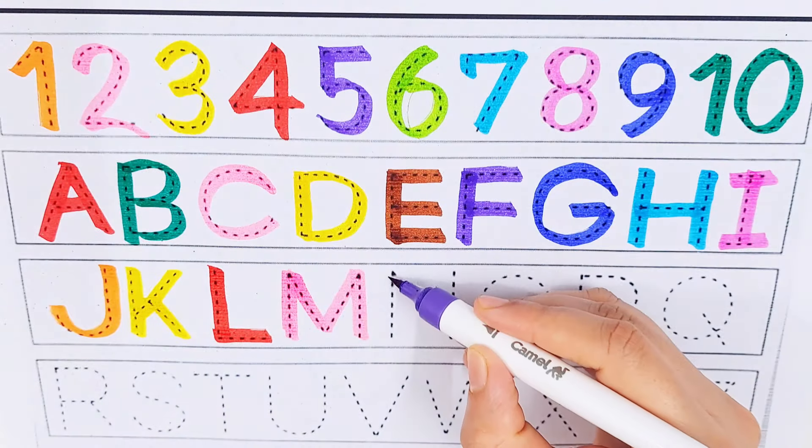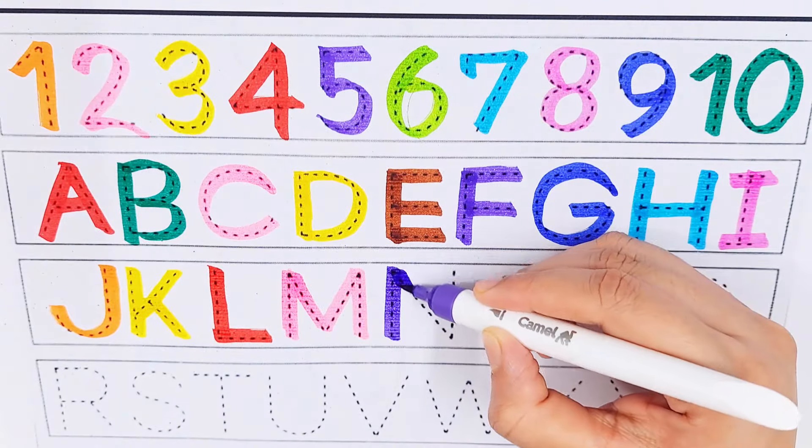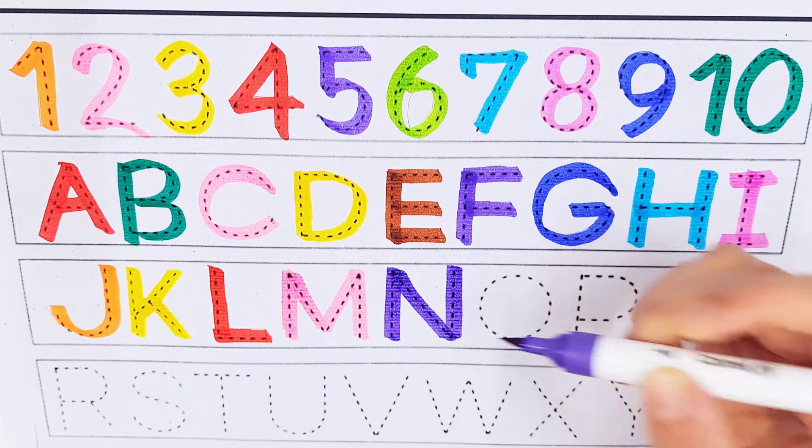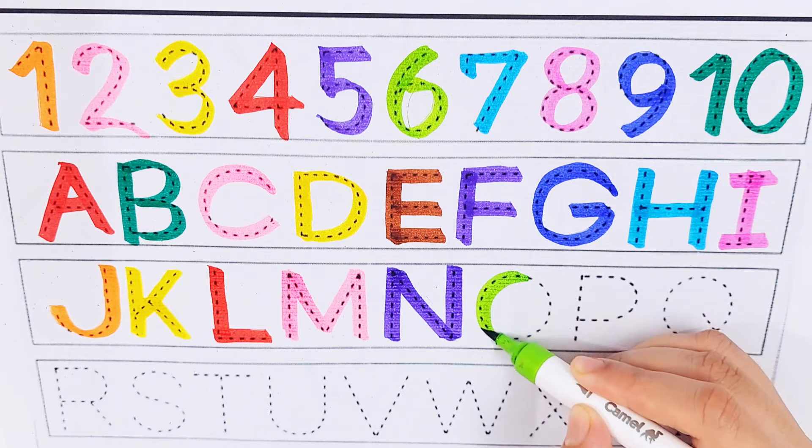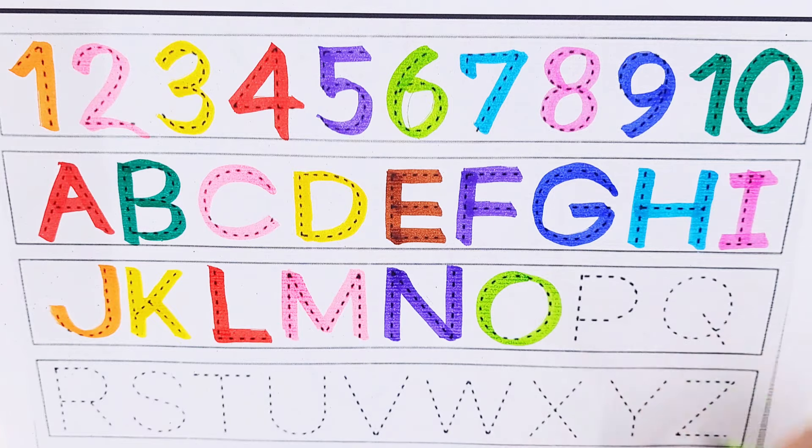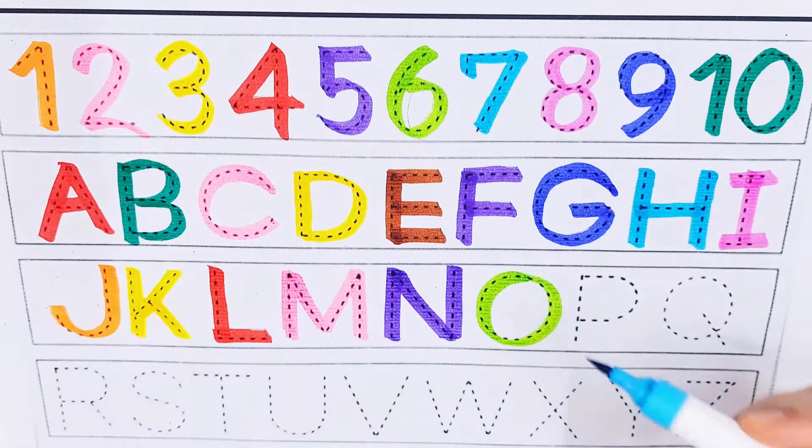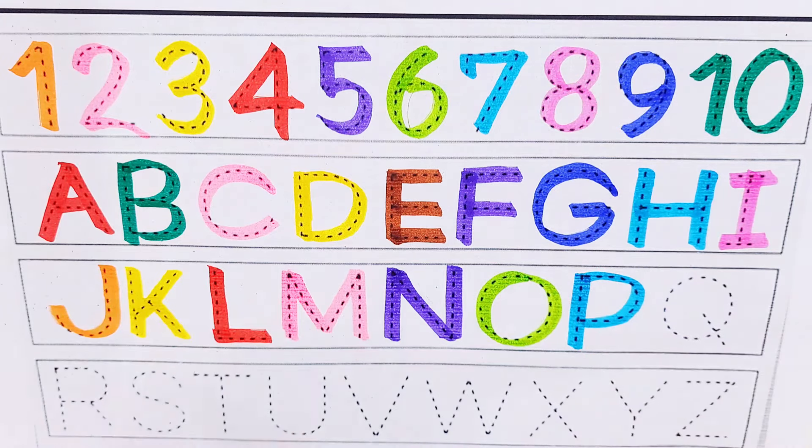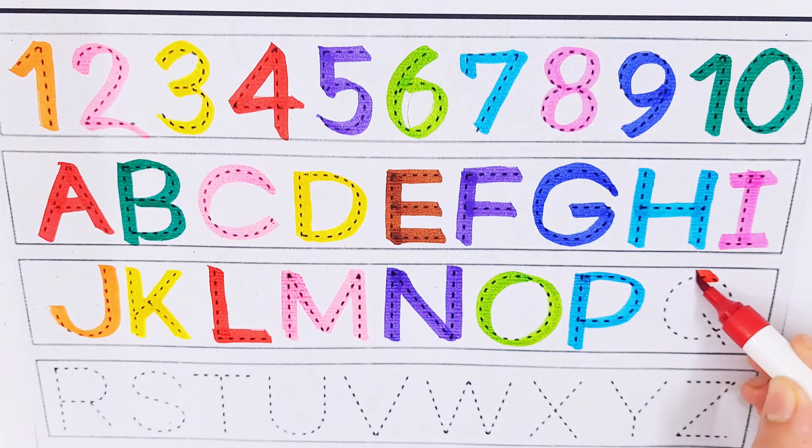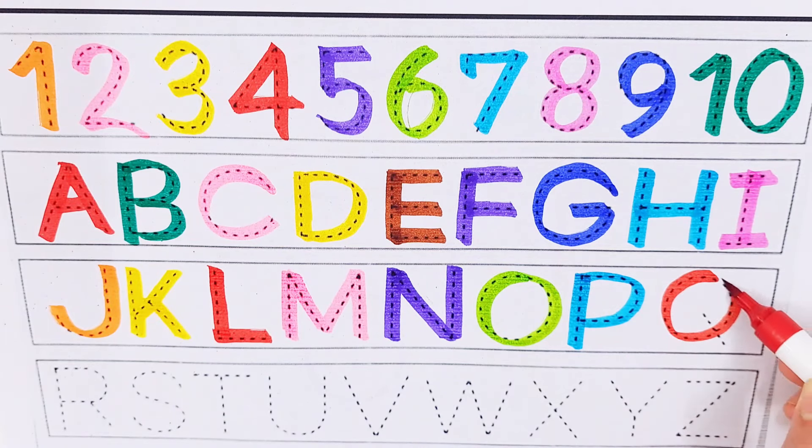Violet color N, N for nurse. Light green color O, O for ox. Sky blue color P, P for pen. Red color Q, Q for quilt.